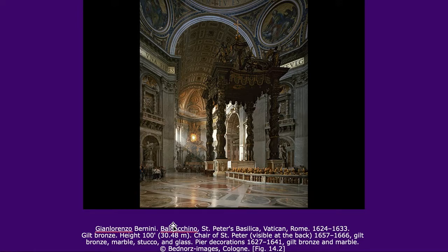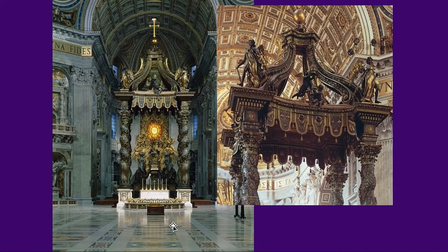The baldachin sits over the tomb of St. Peter, because it's still there — this is why the church is built there. On the left is a view through the baldachin, and on the right is a detail showing the top part where Bernini has made it look as if four angels, one on each corner, have just landed — just come down from heaven, bringing a large golden crown-like shape with them, suspended by chains. You can even see a chain here in the hand of this angel, crowning the tomb of Peter.